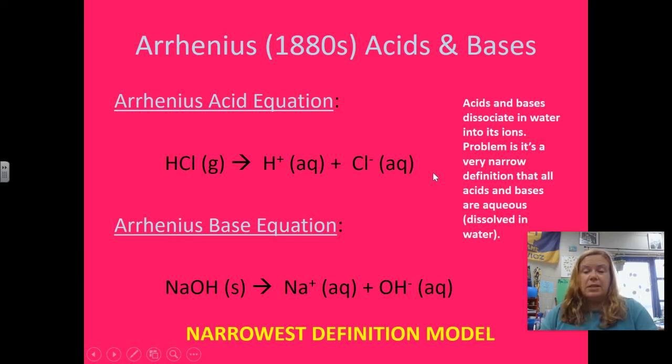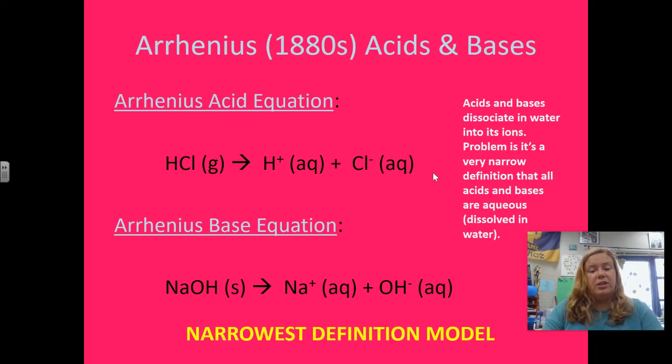Most, many acids and bases are aqueous. However, there are many that aren't, and so that's why it's very difficult to use the Arrhenius model for everything. So that's definitely the narrowest definition model.